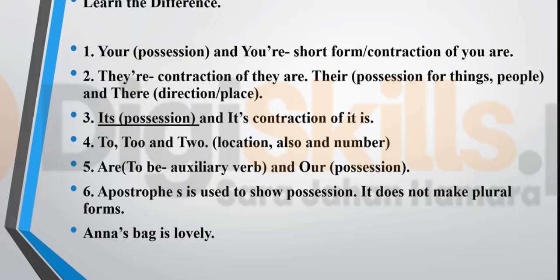There are several commonly confused words. 'Your' shows possession. 'You're' (y-o-u-apostrophe-r-e) is the contraction of 'you are.' 'They're' is the contraction of 'they are.' 'Their' (t-h-e-i-r) shows possession for things or people. 'There' (t-h-e-r-e) shows direction or place. 'It's' is a contraction of 'it is,' and when 'its' shows possession you never add an apostrophe. 'To' is a preposition showing location or direction — 'I will go to the market.' 'Too' (t-o-o) is an adverb. 'Two' (t-w-o) is the number. 'Are' is a to-be auxiliary verb. 'Our' (o-u-r) shows possession — our bag, our rooms, our home.